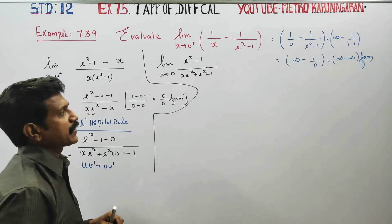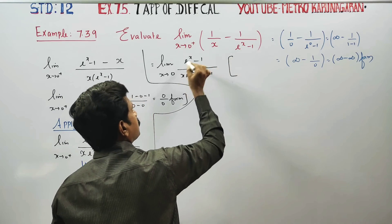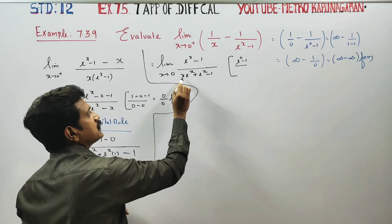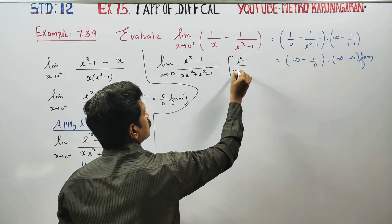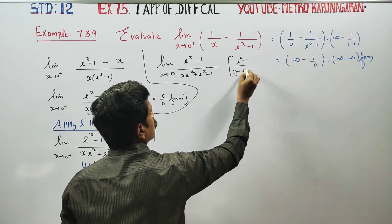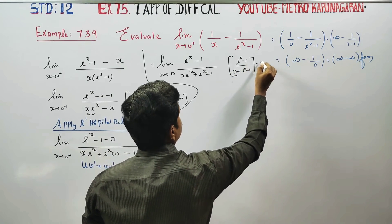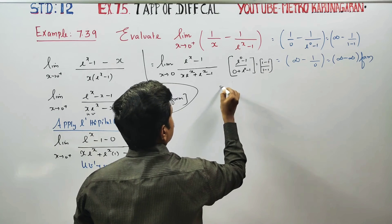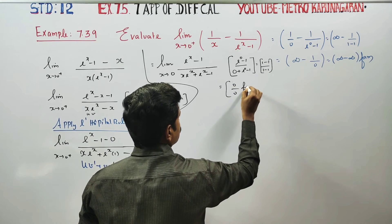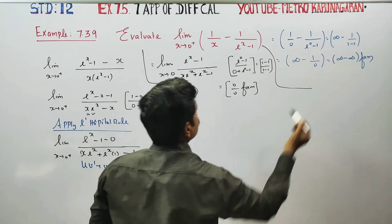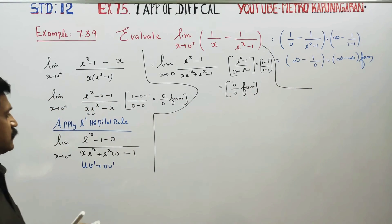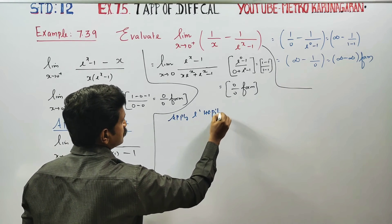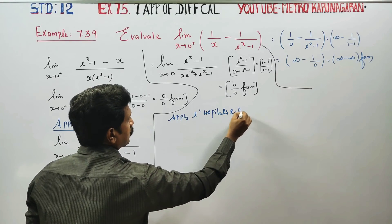Now apply x equals 0: e power 0 minus 1 is 1 minus 1 equals 0 in the numerator. In the denominator, 0 into anything is 0, plus e power 0 minus 1 is also 0. So we get 0 by 0 form again — still indeterminate. Apply L'Hôpital's rule once more.